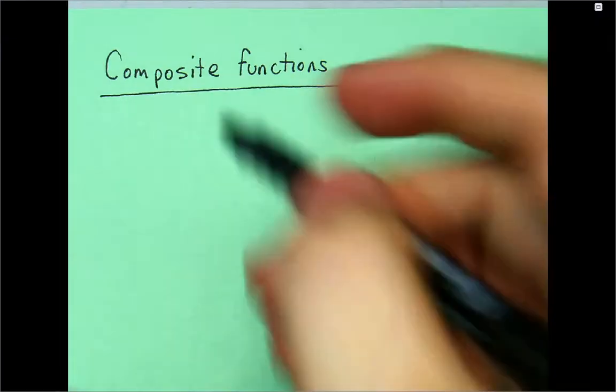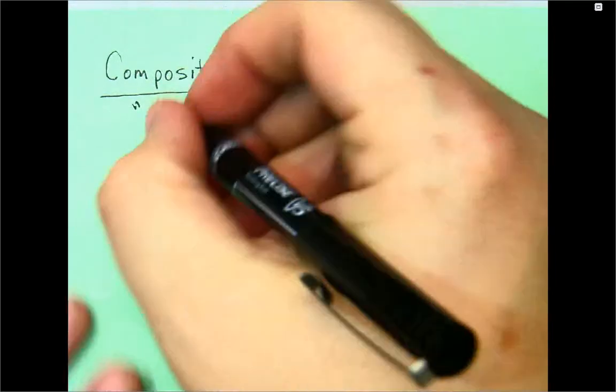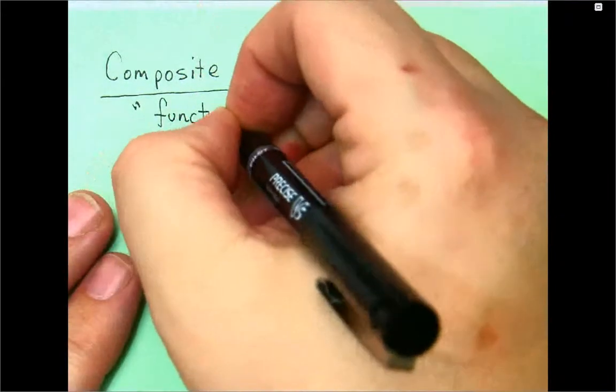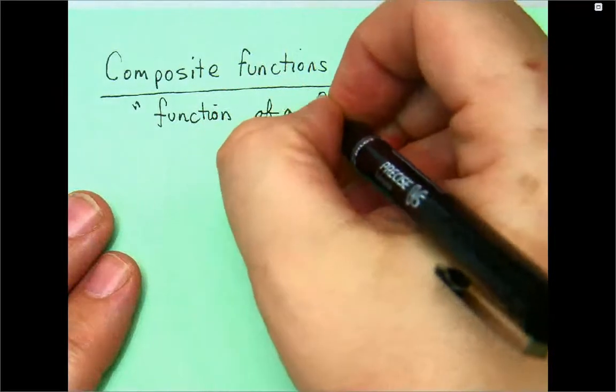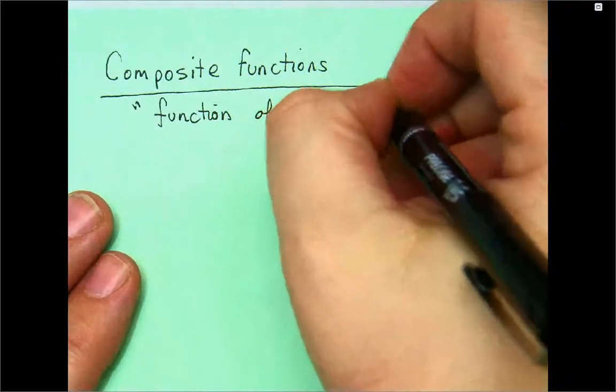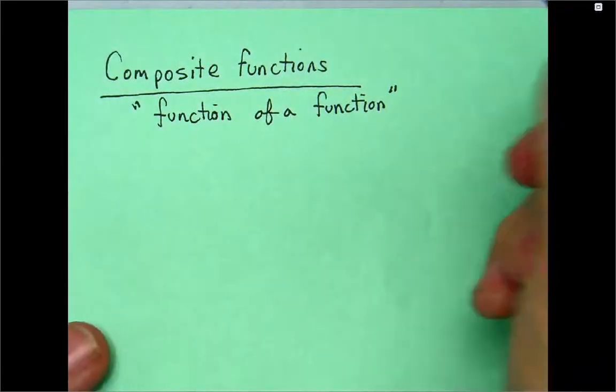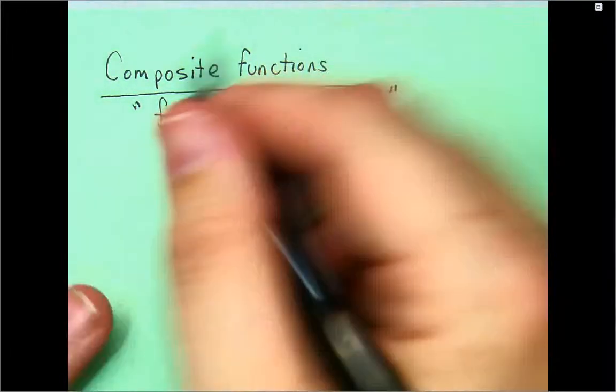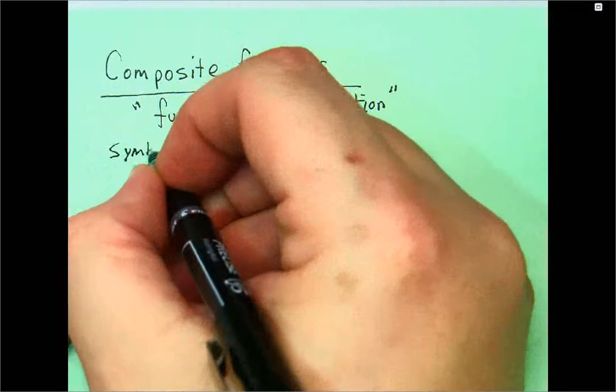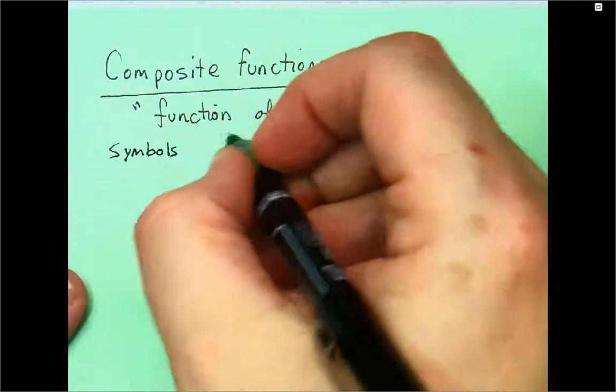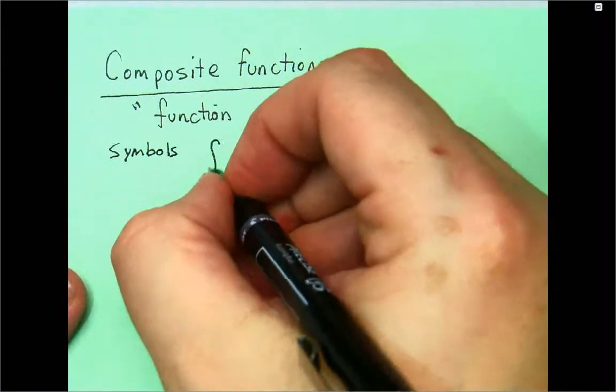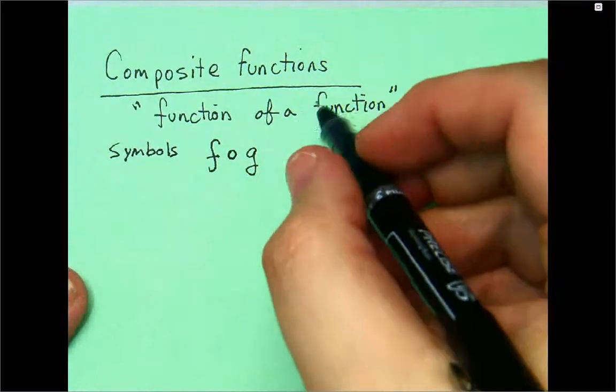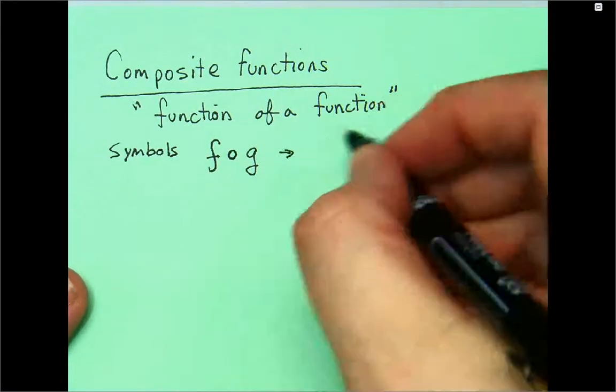Composite functions. You can think of composite functions as a function of a function. And there's a couple, as far as symbols go, you can see this: F with a dot next to G. If we're going to say something here, this would be F composite G.